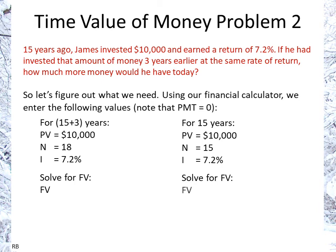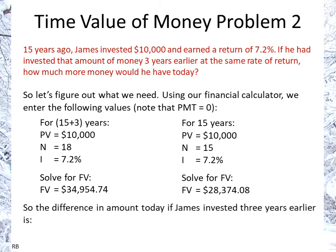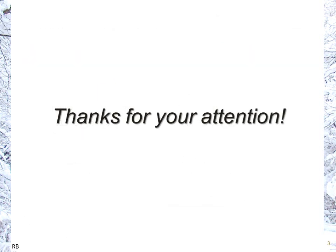Now we solve for future value, and that's $34,954 and $28,374. If we subtract the two, you basically have the difference he would have earned if he'd invested it three years earlier — and there we have $6,580.67. Thanks for your attention, and hope that helped.